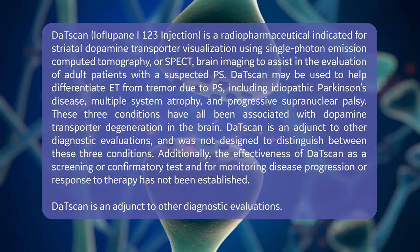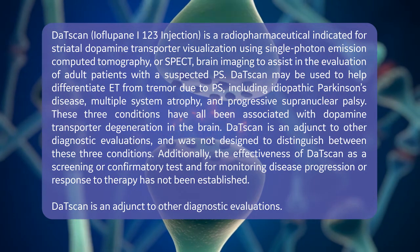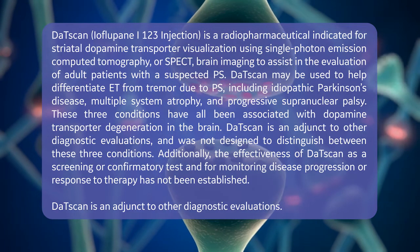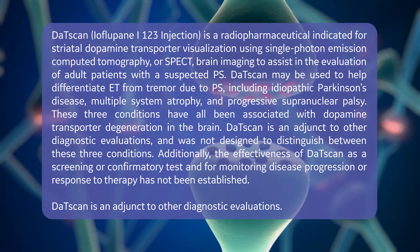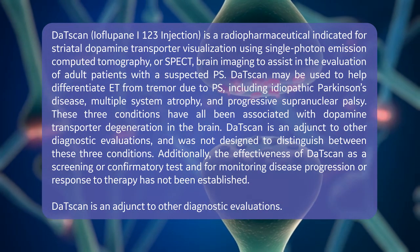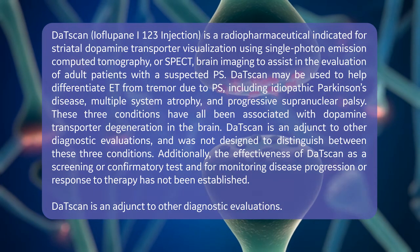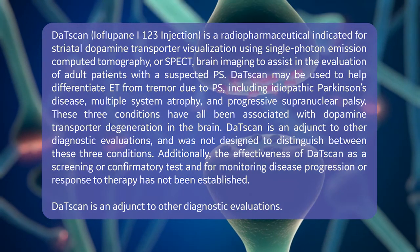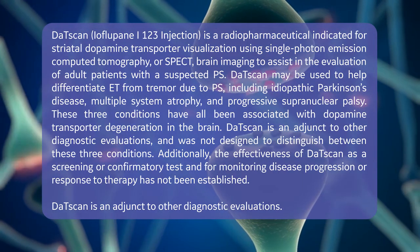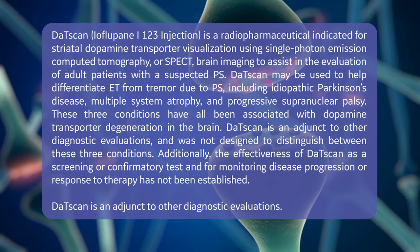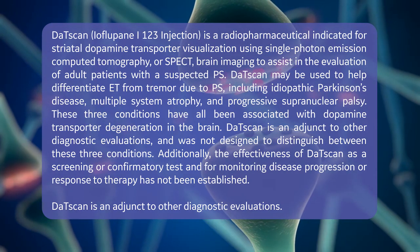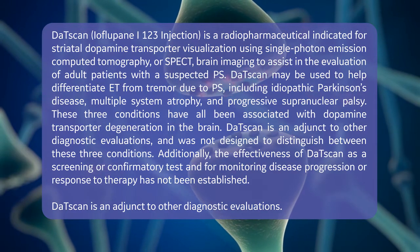DATSCAN is a radiopharmaceutical indicated for striatal dopamine transporter visualization using single photon emission computed tomography, or SPECT, brain imaging to assist in the evaluation of adult patients with a suspected PS. DATSCAN may be used to help differentiate ET from tremor due to PS, including idiopathic Parkinson's disease, multiple system atrophy, and progressive supranuclear palsy. These three conditions have all been associated with dopamine transporter degeneration in the brain.